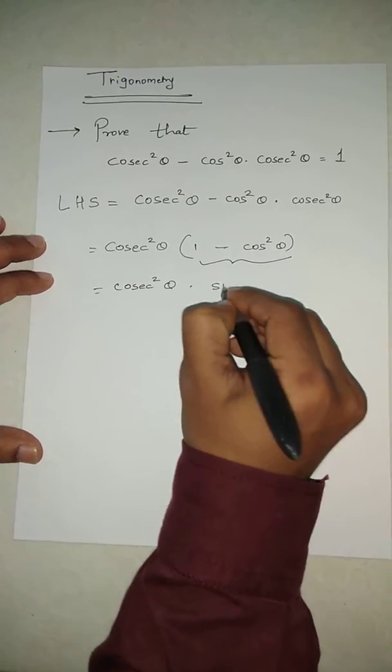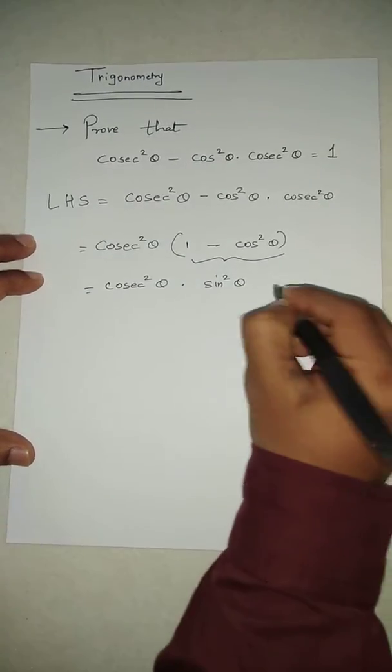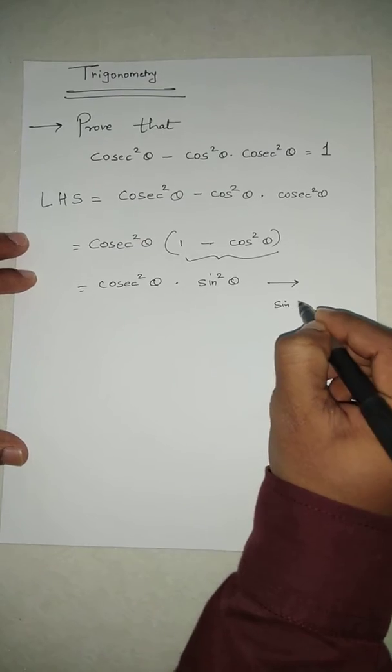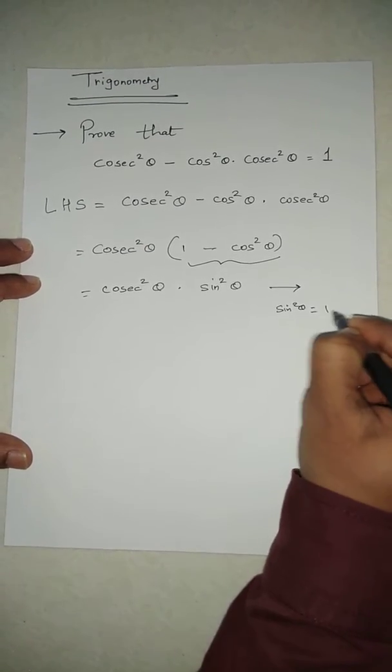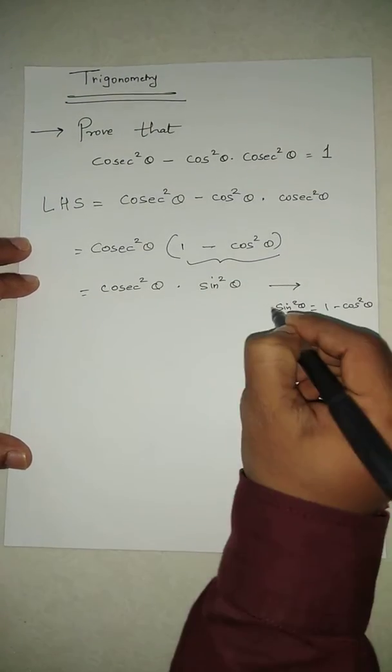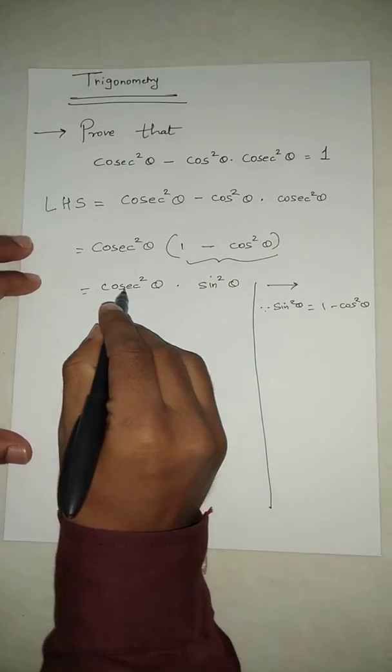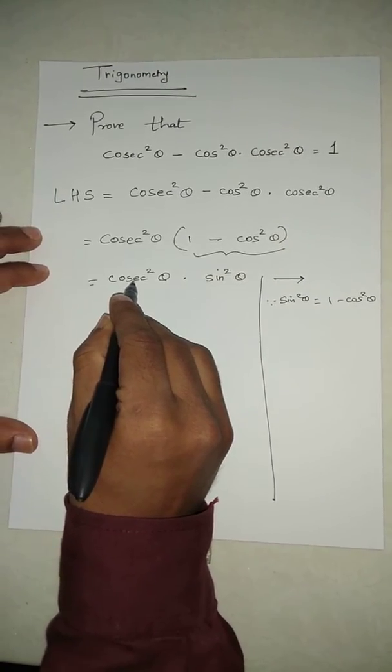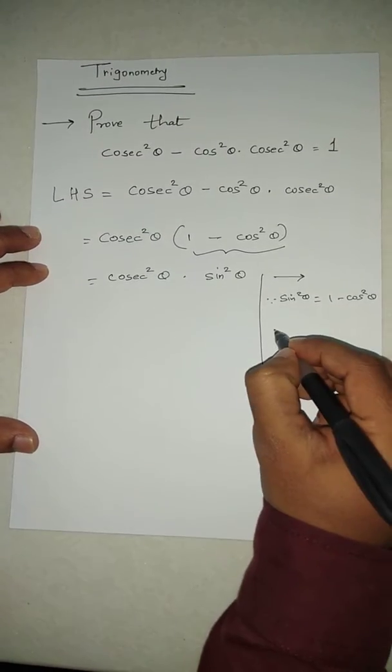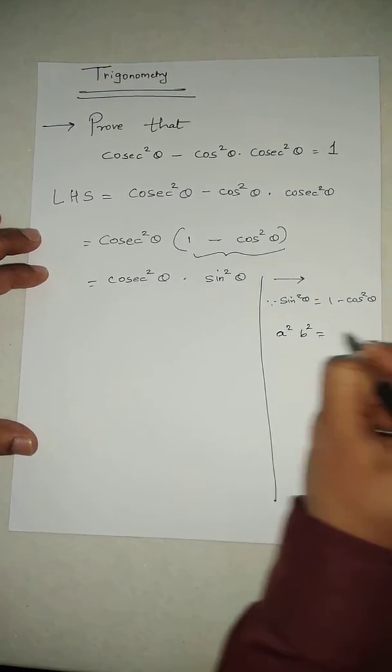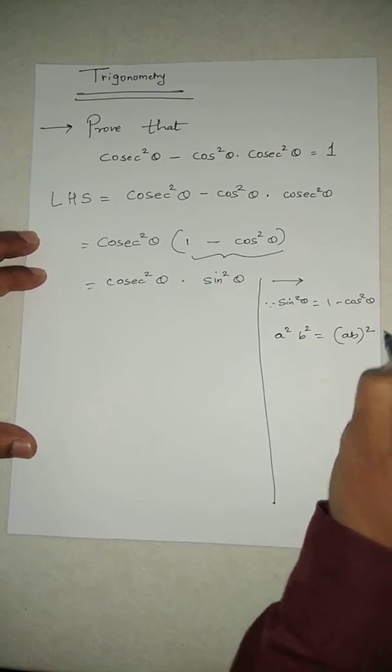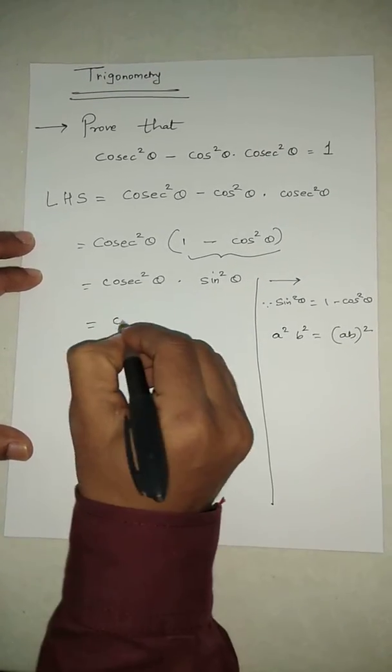Now same way here, if we consider this as a and b, we can write a²b² as (ab)². So same thing here, cosec²θ · sin²θ will get replaced by (cosec θ · sin θ)².